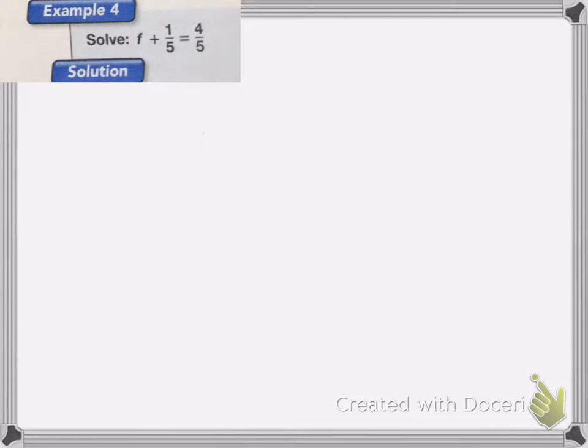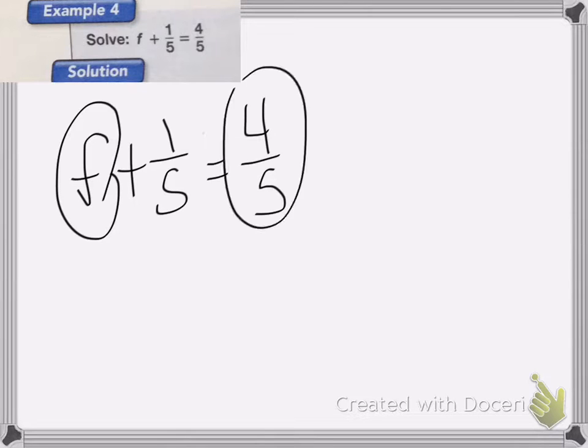On this one, we have F plus 1 fifth is equal to 4 fifths. Again, F, in this case, F is going to be a smaller number than my total. So, to solve it, we're going to do 4 fifths minus 1 fifth to figure out what F is.